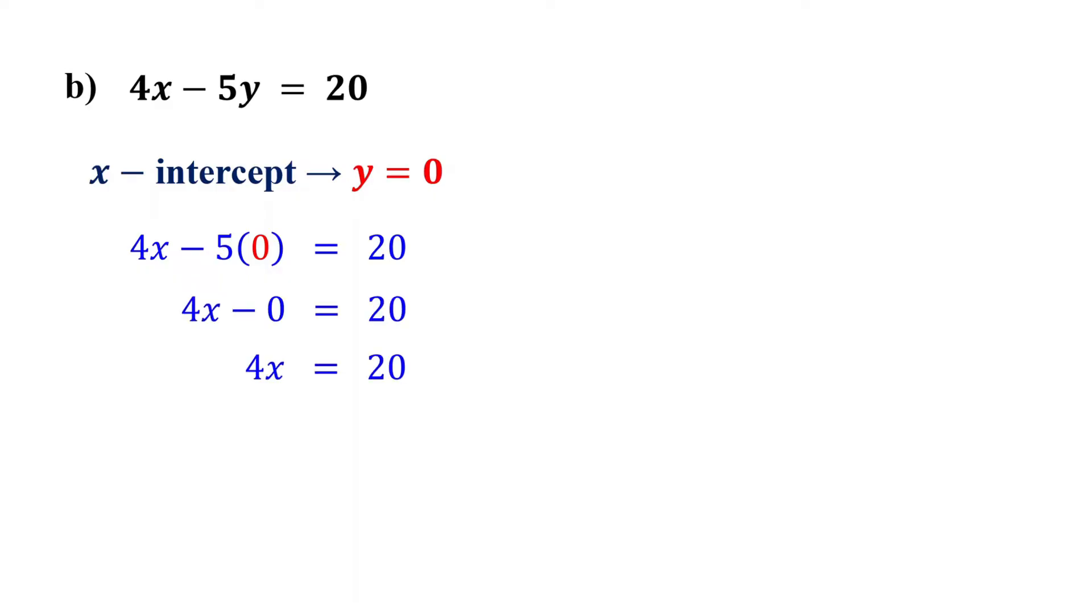This simplifies to 4x equals 20. If we divide both sides by 4, we find that x equals 5. So, the x-intercept is the point (5, 0).